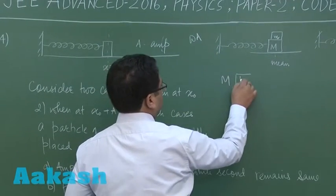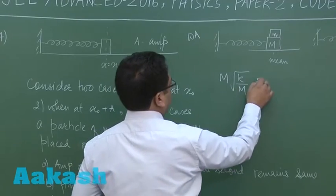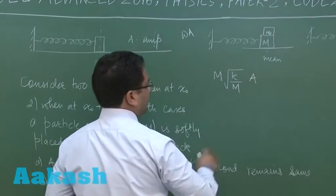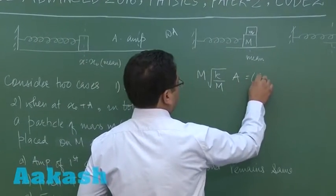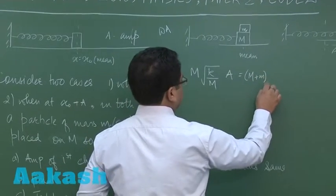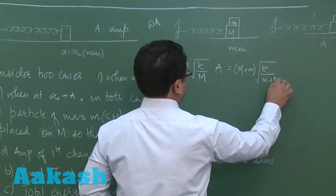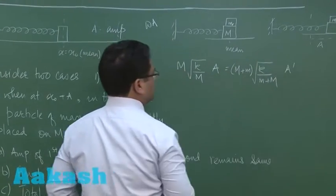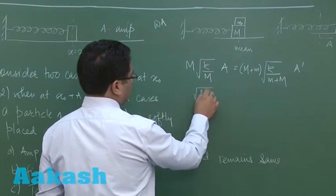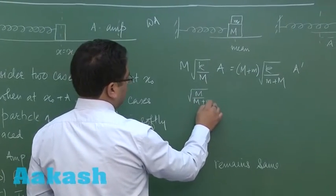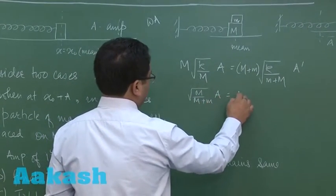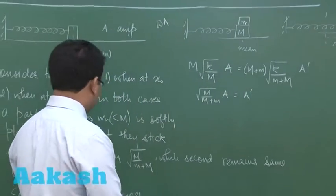So omega is k by m into the initial amplitude a equals m plus m k by m plus m into a dash. And that will give us root m by m plus m times a equals a dash. That's in case one.